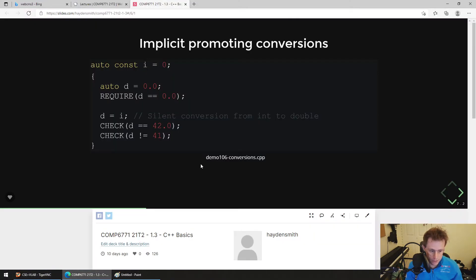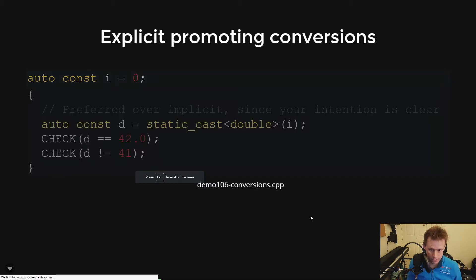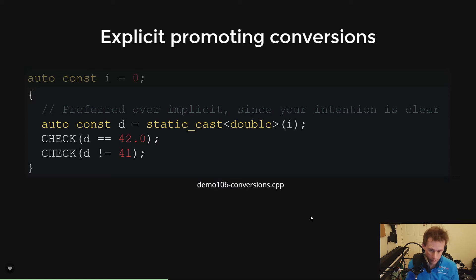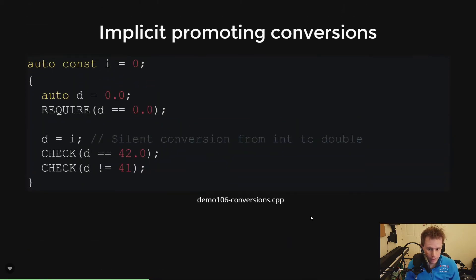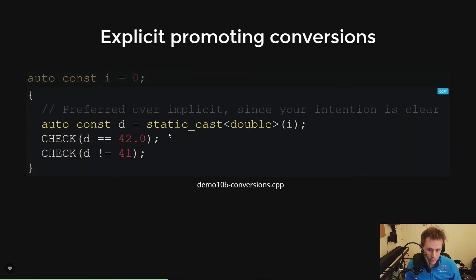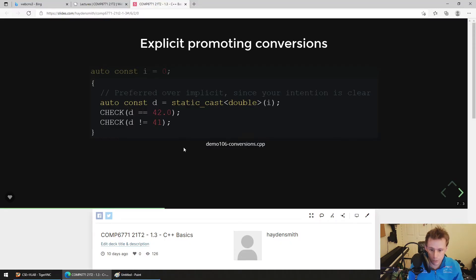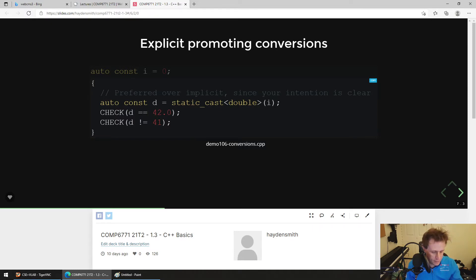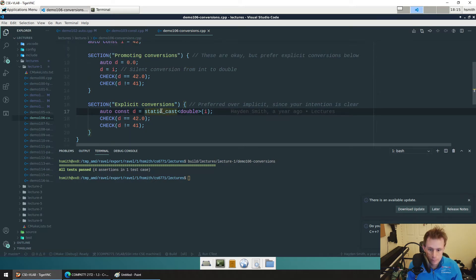The other part of type conversions is explicit promoting conversions — where you explicitly tell the compiler you'd like to convert something. Instead of just saying `d = i`, we say `d = static_cast<double>(i)`. `static_cast` is a function built into the C++ core library so you don't have to import anything. Its main purpose is that it tells the programmer exactly what you're doing. It gives a lot of intent, because casting is a common source of errors.